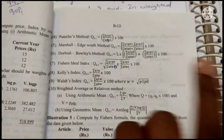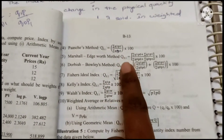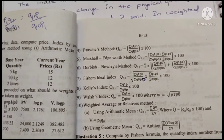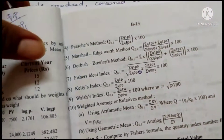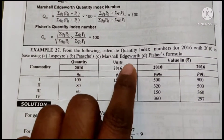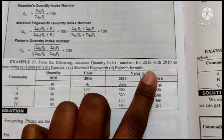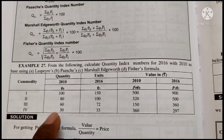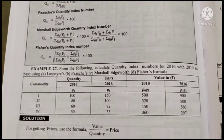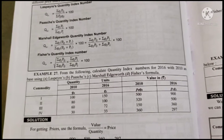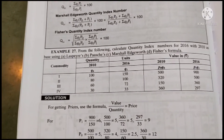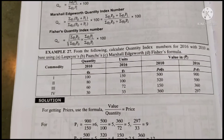All remaining formulas are the same as price index formulas, but in place of P we write Q. Now let us look at the problem. From the following data, calculate quantity index numbers for 2016 with 2010 as base. We have to calculate Laspeyre's, Paasche's, Marshall, and Fisher formulas. For these calculations, Q0, Q1, P0, and P1 are required.